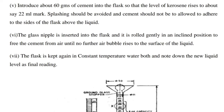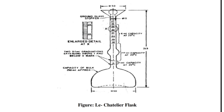Fifth, introduce about 60g of cement into the flask so that the level of kerosene rises to about 22 ml mark. Splashing should be avoided and cement should not be allowed to adhere to the sides of the flask above the liquid. Sixth, the glass nipple is inserted into the flask and it is rolled gently in an inclined position to free the cement from air until no further air bubbles rise to the surface of the liquid. Seventh, the flask is kept again in the constant temperature water bath and the new liquid level is noted as the final reading. This figure shows the Le Chatelier flask.